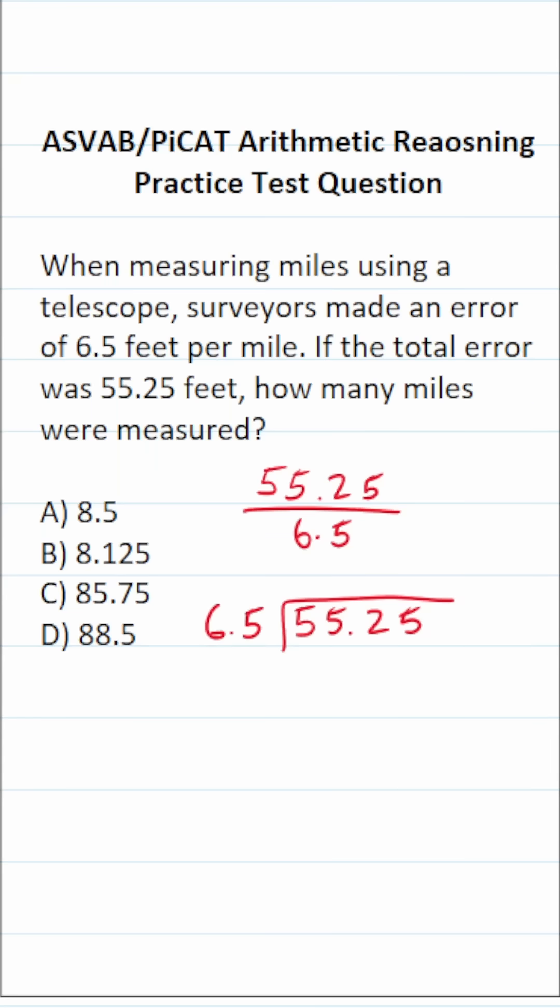When you do long division with decimals, in order to proceed, you have to have no decimal outside the division bracket. In this case, we have 6.5, a decimal outside the division bracket.